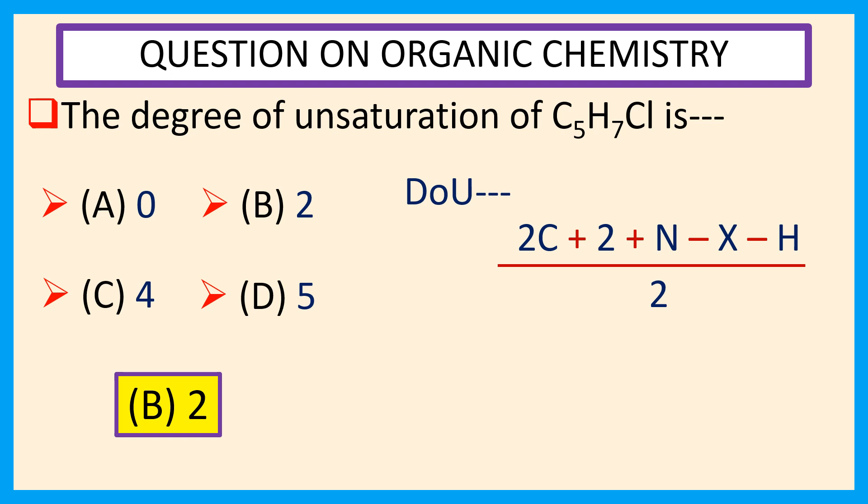Where C is the number of carbon atoms, N is the number of nitrogen atoms, X is the number of halogen atoms, and H is the number of hydrogen atoms present in the molecular formula.